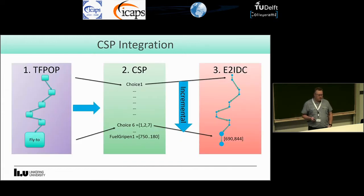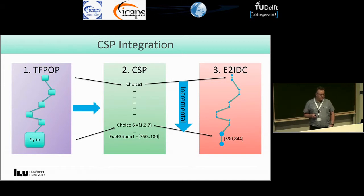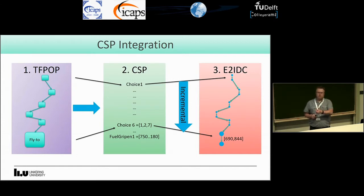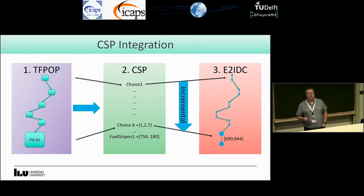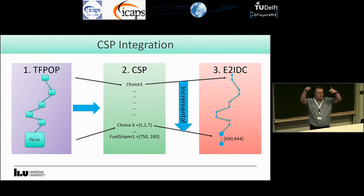The integration looks like this: we have the planner, and every time it adds an action we also get a choice in the CSP. When the CSP decides on something it puts the values into the STNU, which incrementally grows. These two grow mirroring each other — the CSP is a depth-first search and assigns values in the same way as the STNU grows, and if they backtrack, they do it together.